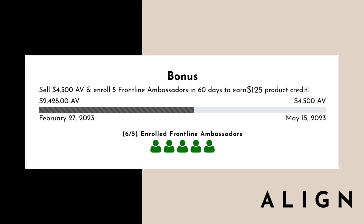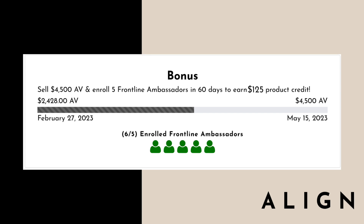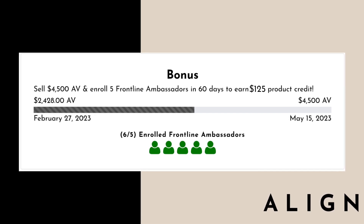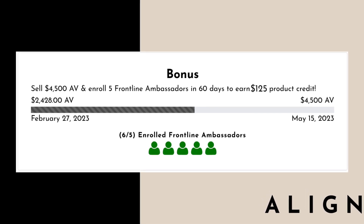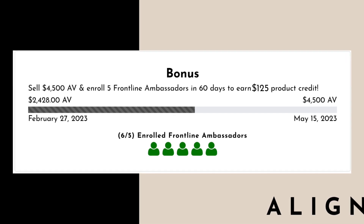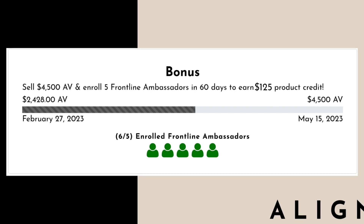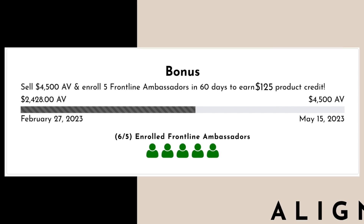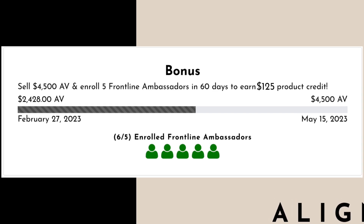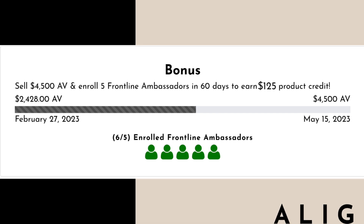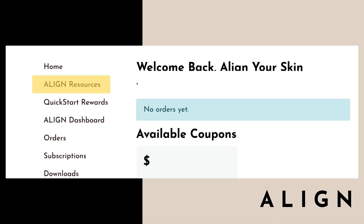If you scroll all the way to the bottom of your Quick Start page, you'll see it is calculating everything you need to track to also achieve the Bonus Quick Start level, which gets you an additional $125 in product credit. On that bonus level, it is tracking all of your ambassador volume from the date you start and all of your enrolled frontline ambassadors.